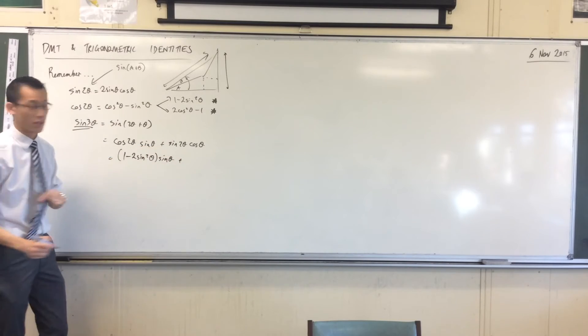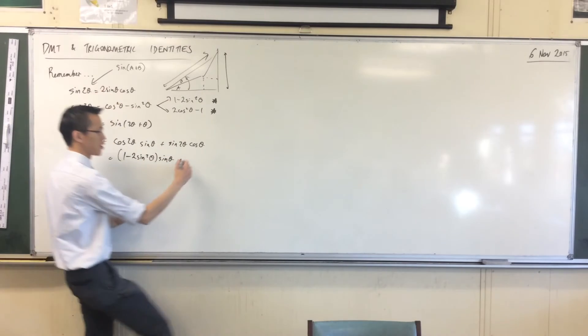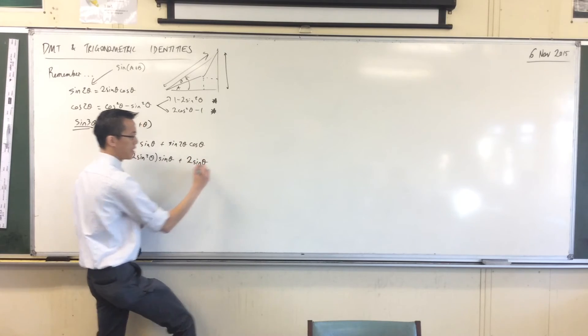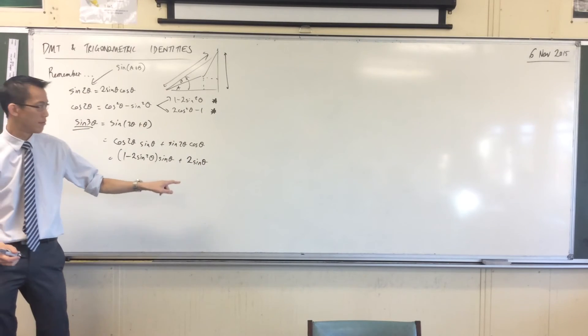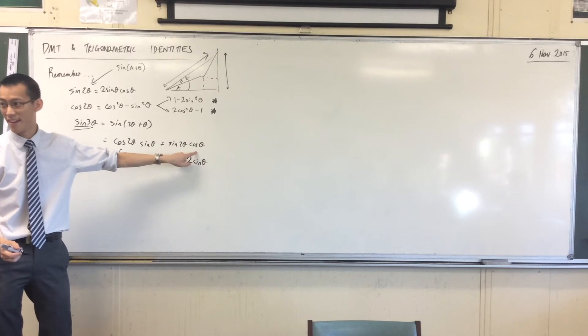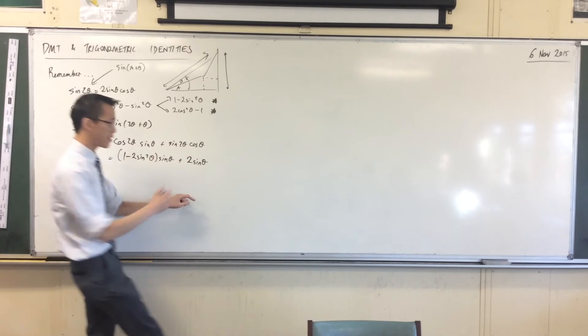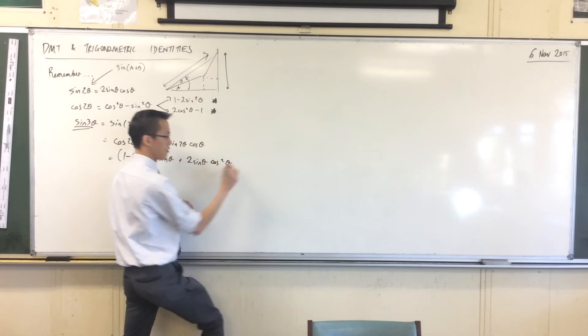I know what sine 2 theta is, it's right there. So I've got 2 sine theta. Now, I would normally write cos theta, but there's another cos theta hanging on the end there, right? So this is cos squared theta.